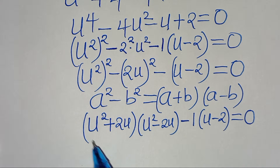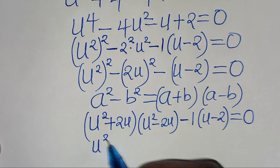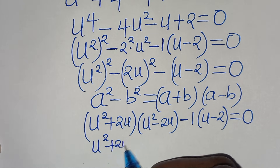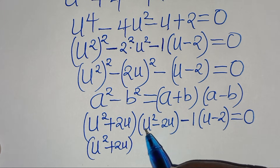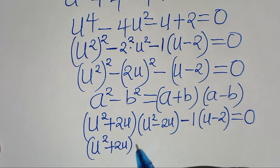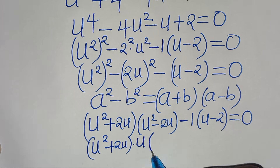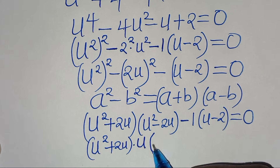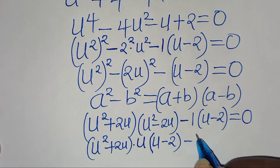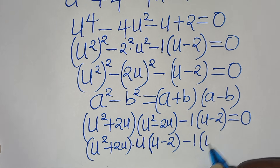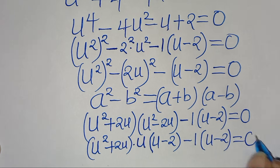From here we have (u squared plus 2u). Now for (u squared minus 2u), u is common here so we can factor out u, so that into the parentheses we have (u minus 2), then subtract 1 into the parentheses (u minus 2), this is equal to 0.